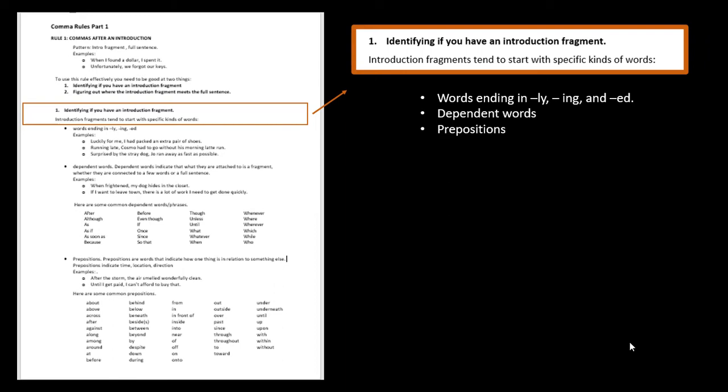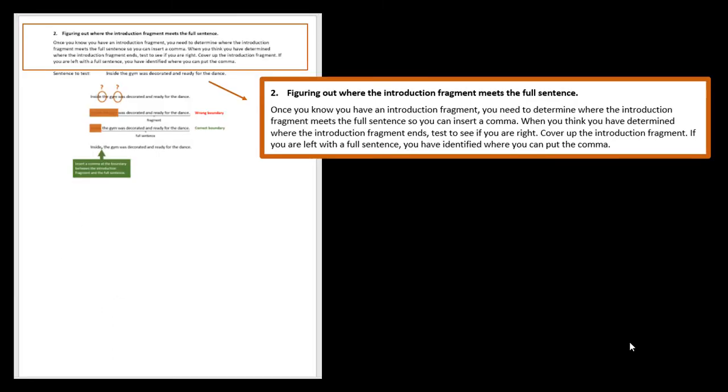So now that we've talked about what we need to be good at, the first thing we need to be good at, which is identifying if you have an introduction fragment, we're going to talk about number two, which is figuring out where the introduction fragment meets the full sentence. So that boundary is really important because once you have determined where the introduction fragment ends, you can put a comma. And so you need to test and see whether you've correctly identified where the introduction fragment ends. And the way to test for that is to do some covering up to check and see if you are still left with the parts you need.